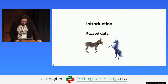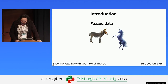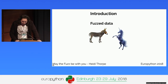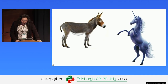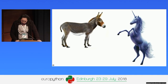With fuzz testing, instead of using images of an orange and a chair, you would instead possibly use images of a donkey and a unicorn. Is a donkey a horse? Well, not really, but closer than an orange. Is a unicorn a horse? Still not quite, but it's closer to what we're expecting. But it's still unexpected data and could cause unexpected results.